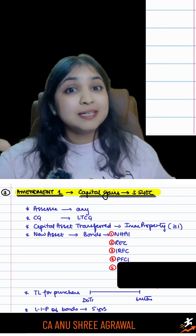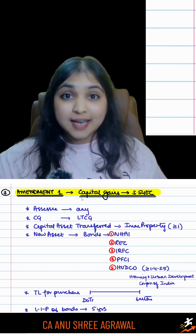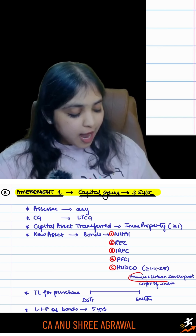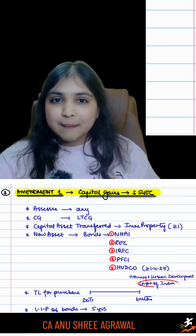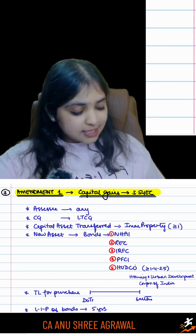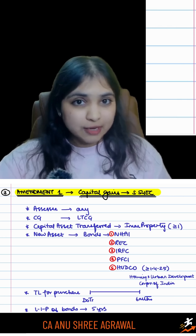Now, the amendment is that one more bond has been notified — Bonds of HUDCO, i.e., Bonds of Housing and Urban Development Corporation of India, provided these bonds were acquired on and after 1st April 2025.